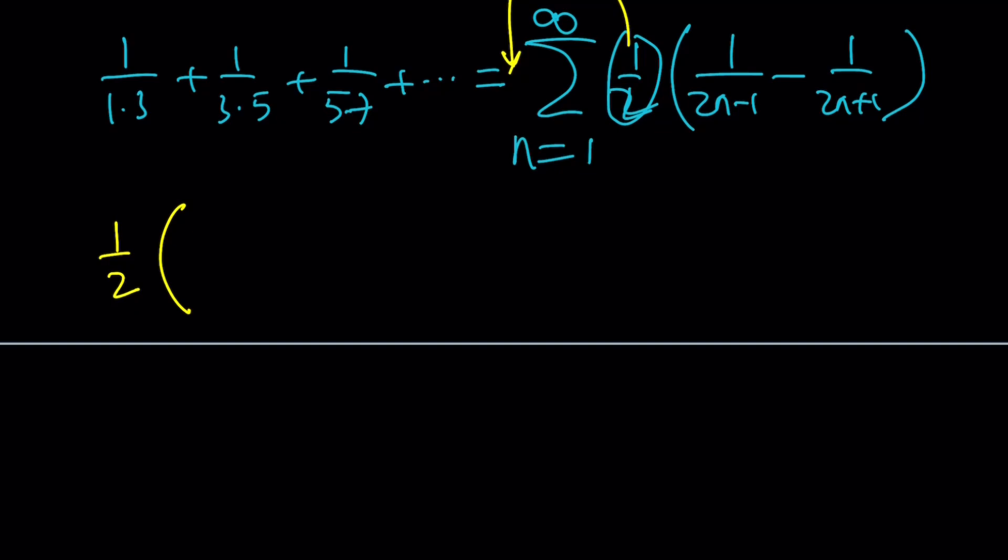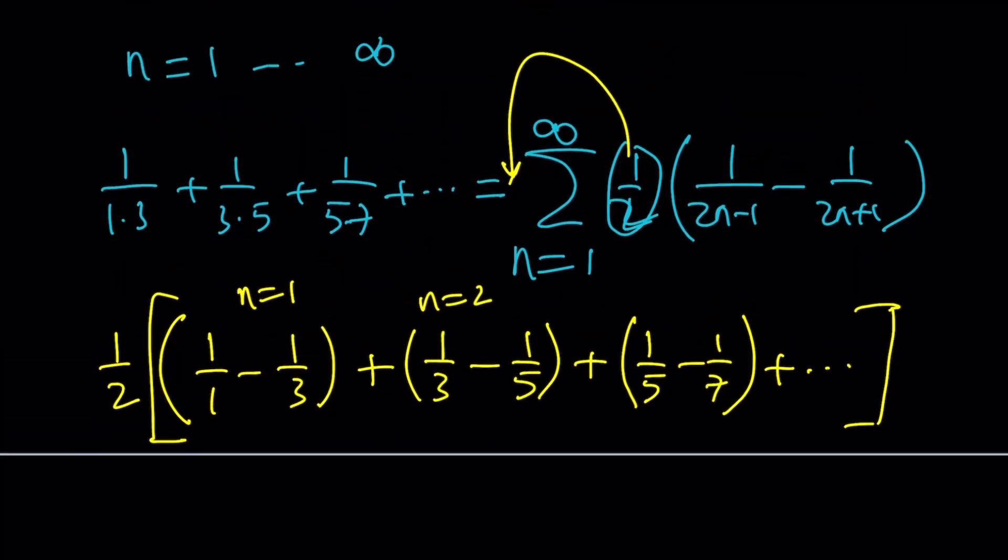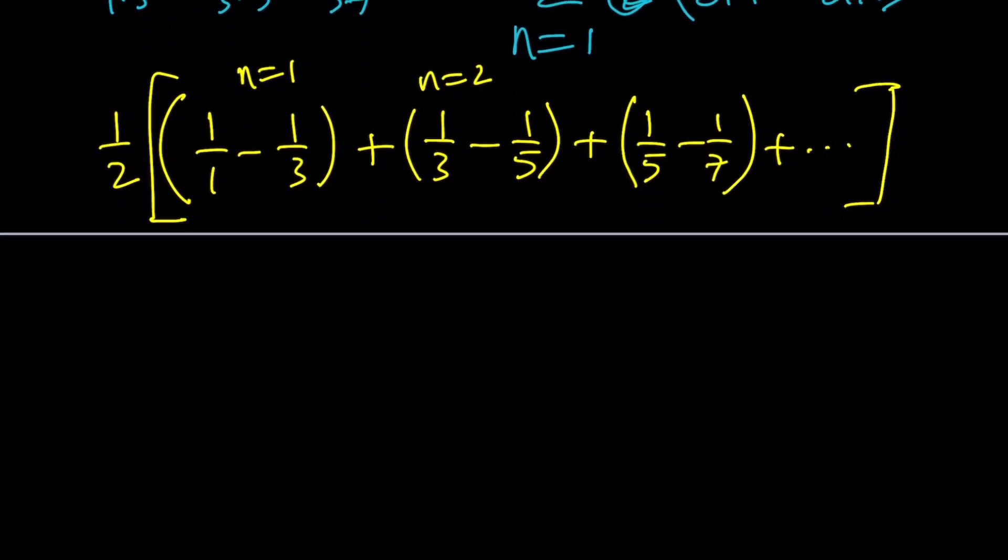Take the 1 half out if you want. Replace n with 1. You're going to get 1 over 1 minus 1 over 3. That's the first term, and let's put a little bracket here, plus for n equals 2, this is for n equals 1, for n equals 2, you're going to get 1 over 3 minus 1 over 5, and then for n equals 3, 1 over 5 minus 1 over 7. The first three terms are obtained this way, but of course they will continue the same pattern. Goes on forever. Sigma notation is kind of more accurate because it tells you that this is from n equals 1 through infinity.